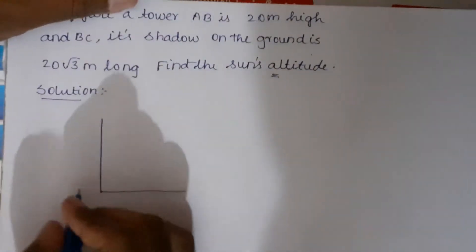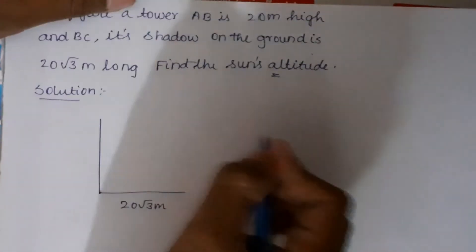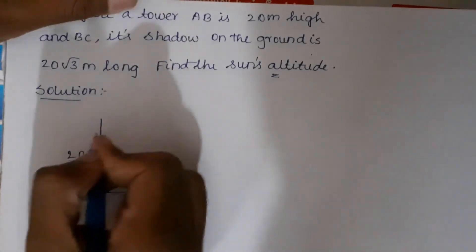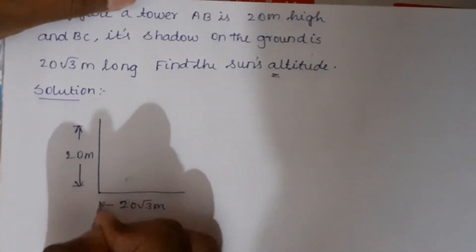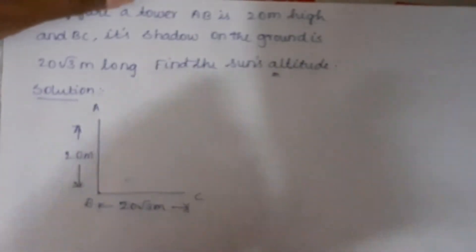The shadow length is 20√3 meters and the height of the tower is 20 meters. AB is the tower and BC is the shadow.